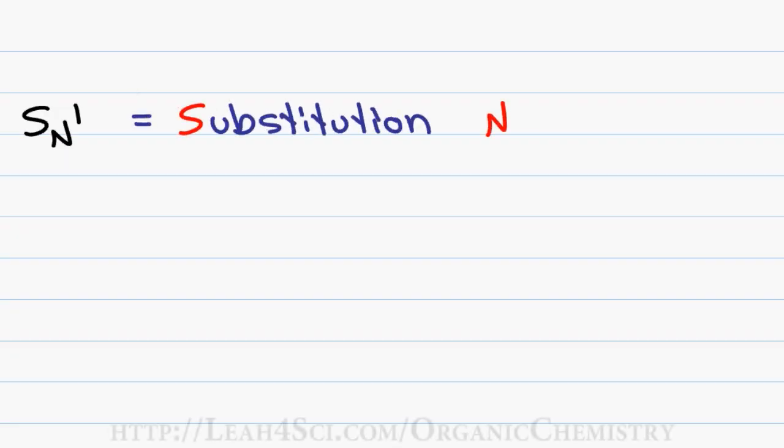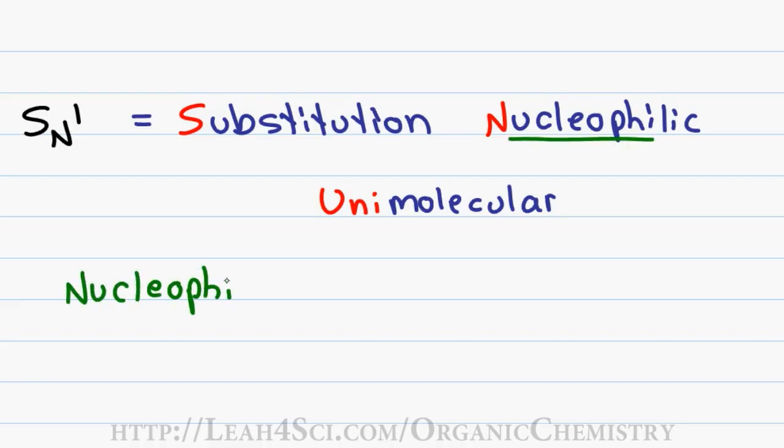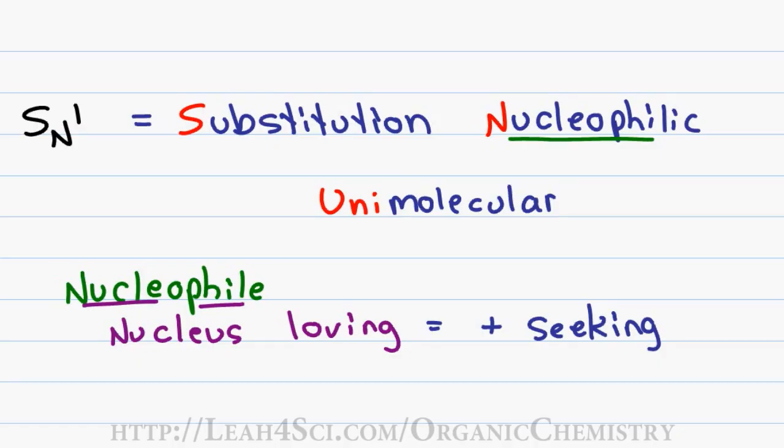SN1 stands for Substitution Nucleophilic Unimolecular. Substitution is when I have a molecule that has a substituent X and I simply substitute it for substituent Y. Nucleophilic comes from the word nucleophile which breaks down into nucleus and loving. In other words, a nucleophile is a molecule that is attracted to positive charge and since the nucleus is positive, we can say that a nucleophile is positive seeking and what type of molecule is attracted to positive, it'll have to be something that is negative or partially negative due to electronegativity and lone pairs of electrons.